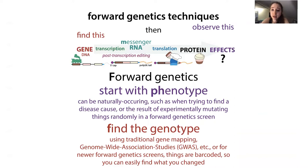In the really early genetics — the first forward genetics experiments — scientists were mutating fruit flies using chemicals like random mutagens that cause mutations randomly. Then you'd observe flies with cool phenotypes: red eyes, or flies walking around in circles. You want to find out why, but the mutations were introduced randomly, so you need to find where that mutation was made in order to connect the phenotype to the cause.